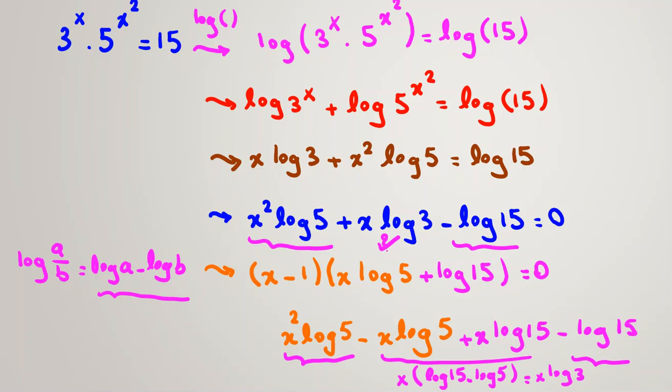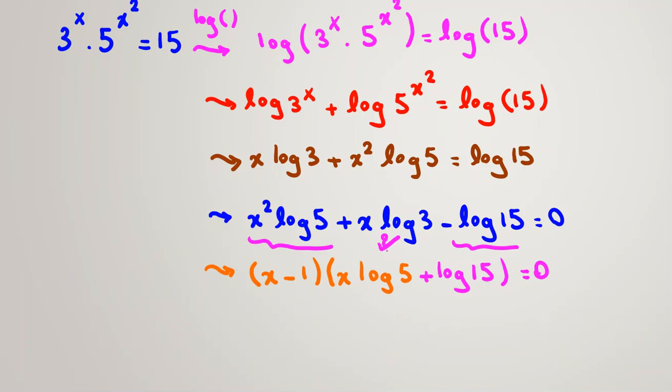Let's erase all these things. Now here, we have two cases. One case is that x minus 1 equals 0. Or this part is 0, x log 5 plus log 15 equals 0. From this part, if you take it to the right-hand side, x equals 1, one answer from this part.